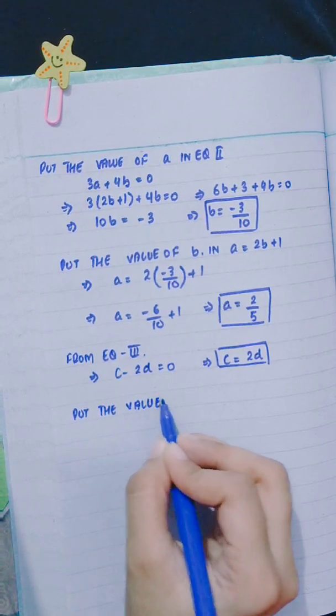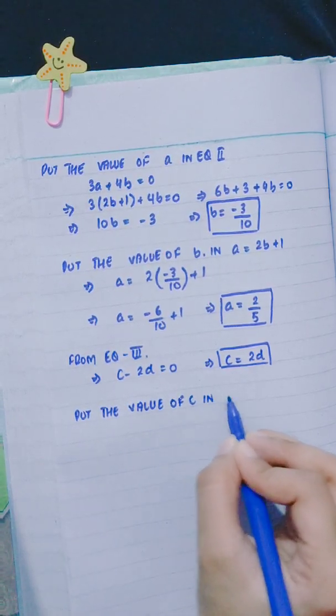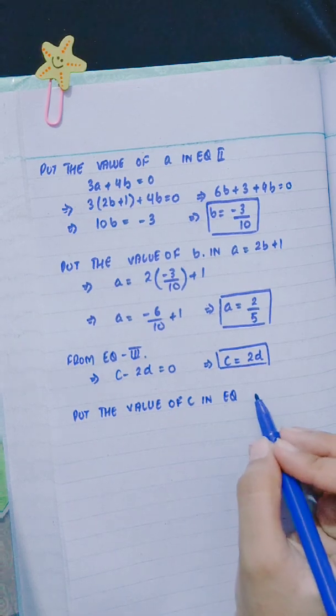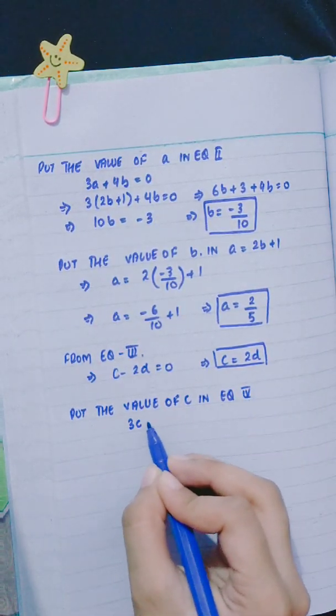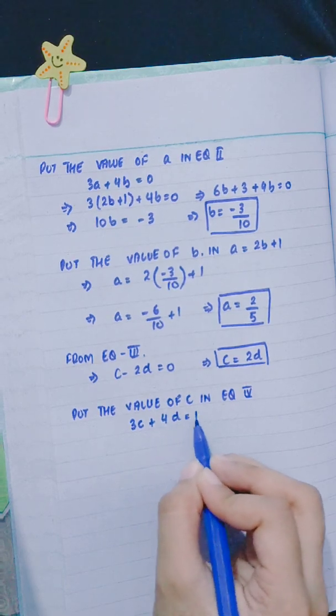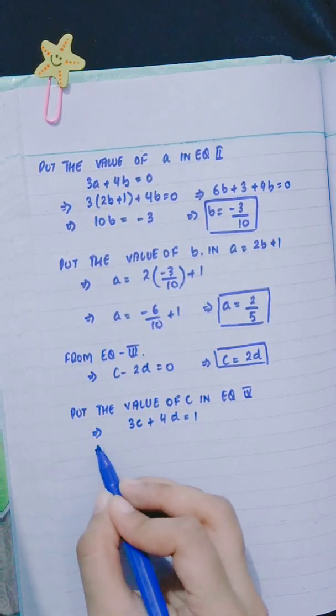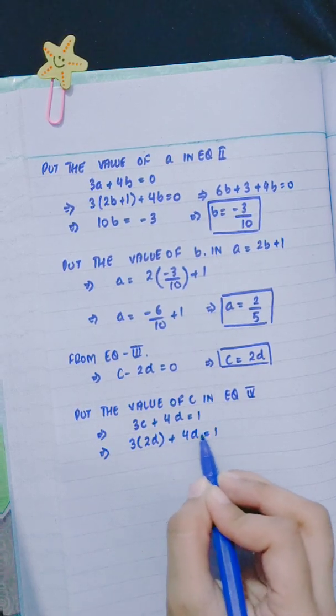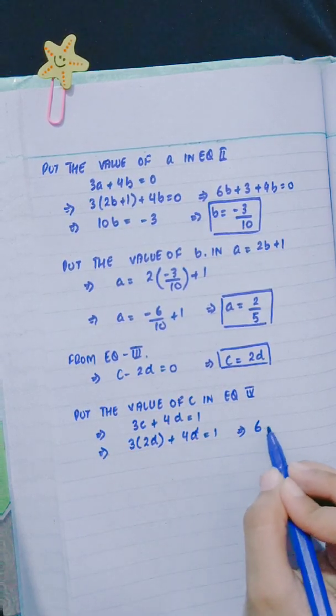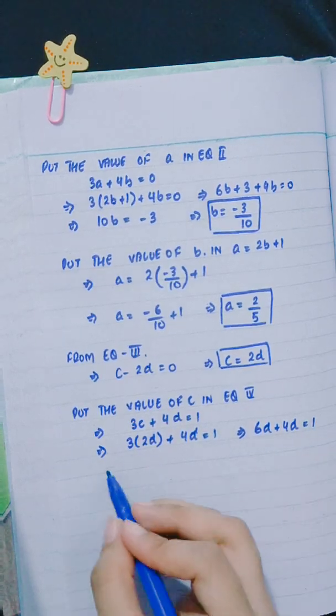Put the value of c in equation number 4. Equation 4 is 3c + 4d = 1. So 3(2d) + 4d = 1. This gives 6d + 4d = 1.